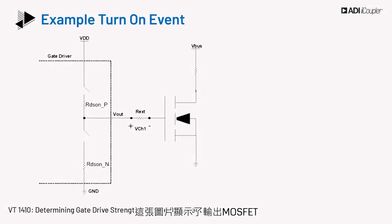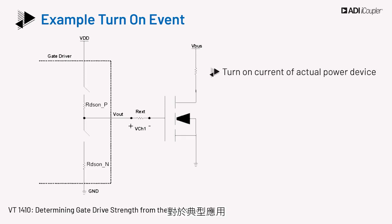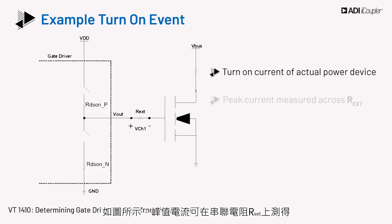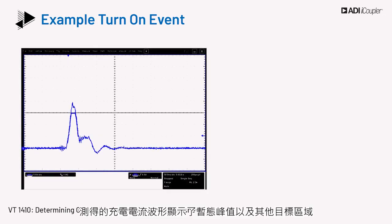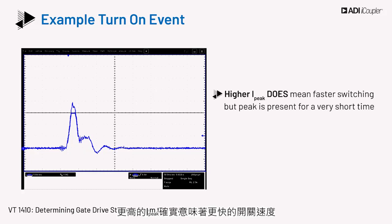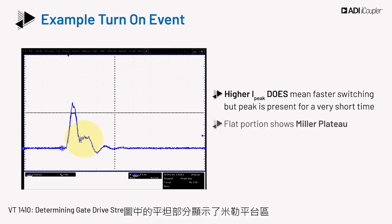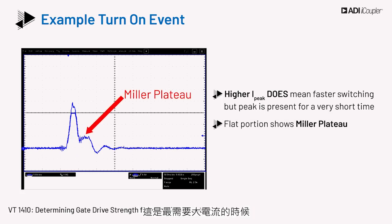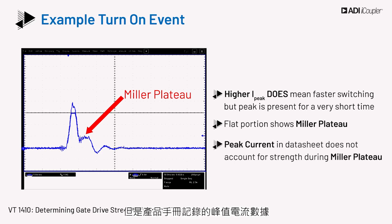This image shows the output MOSFET, which is the usual configuration of the gate driver output stage. For a typical application, series gate resistors are used to control the slew rates and for thermal management of the driver IC. The peak current is measured across the series resistor, or R_EXT. The measured charging current waveform shows the instantaneous peak along with the other regions of interest. Higher I-peak does mean faster switching, but peak current is present for a very short time. The flat portion of the graph shows the Miller plateau, which is the time when high current is most needed, but the peak current number in datasheets doesn't account for it during this time.